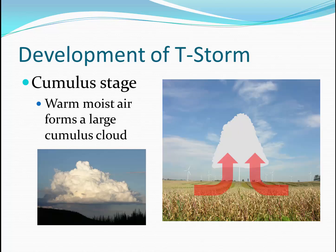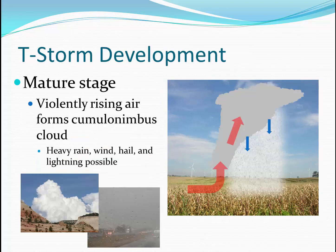There are three stages of thunderstorm development, starting with the cumulus stage. As warm, moist air near the surface rises, it can form a large, developing cumulus cloud. This may eventually become a cumulus-congestus cloud. If the development continues, we can see a full cumulonimbus cloud. This is when the storm has reached its mature stage.